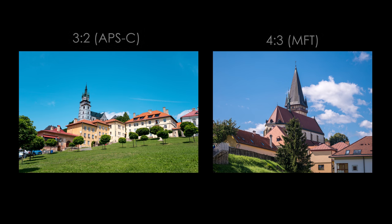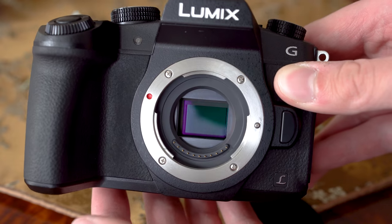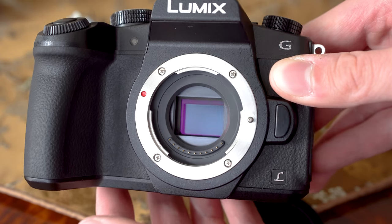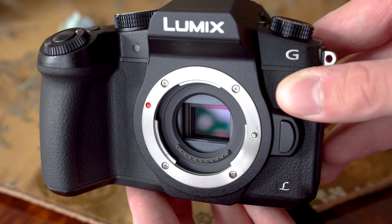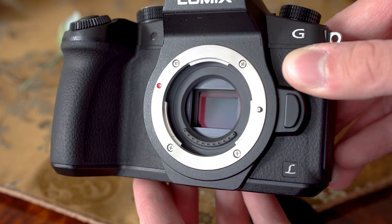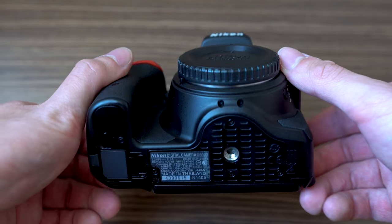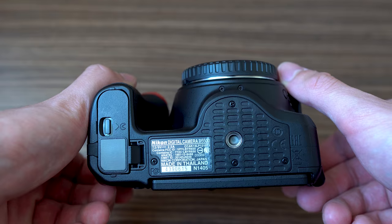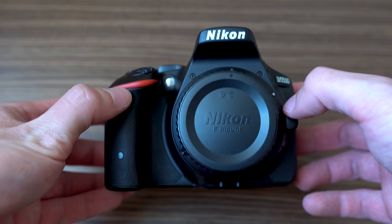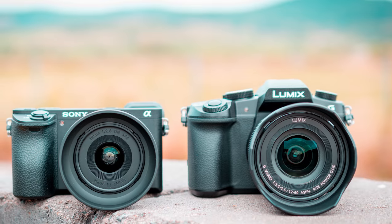APS-C and Micro Four Thirds as terms actually mean much more than just sensor size. They basically represent two different approaches to making crop sensor cameras intended for a variety of users, ranging from amateurs to professionals. So let's talk about some advantages and disadvantages of both systems.